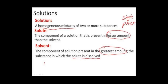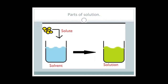Now let's move towards the parts of a solution. There are two parts of a solution: the first one is the solute and the second one is the solvent. Solute is the part of a solution that is present in a lesser amount than the solvent. Solvent is the substance in which the solute is dissolved. In this diagram, you can see that the solute particles are fewer in number while the solvent is more in number.